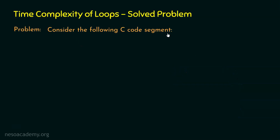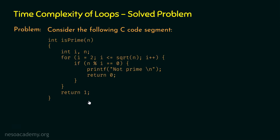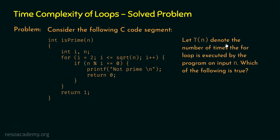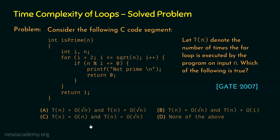Consider the following C code segment. Let tn denote the number of times the for loop is executed by the program on input n. So tn represents the frequency count of the for loop which is executed by the program on input n. Which of the following is true? These are the options and our job is to determine the correct option. In these options we can observe tn is represented in terms of big O and big omega notation.